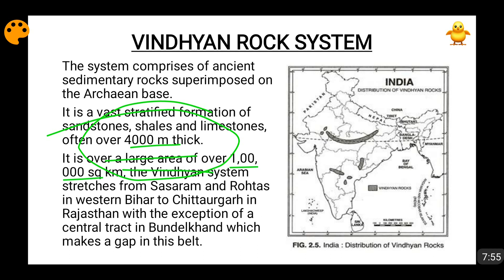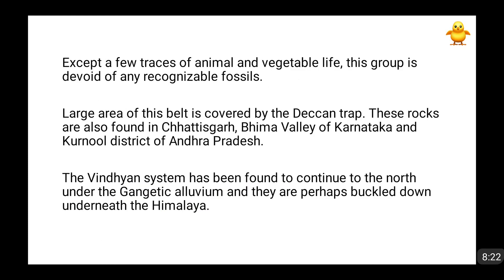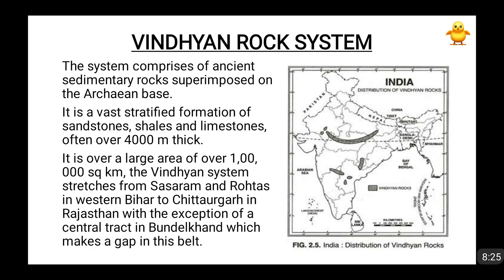The Vindhyan system stretches from Sasaram and Rohtas in Western Bihar to Chittorgarh in Rajasthan. You can see on the map — this Vindhyan system is continuous in this area, though there is a small unconformity in the Bundelkhand region. These rocks are also found in scattered formations in Chhattisgarh, Karnataka, and Andhra Pradesh.